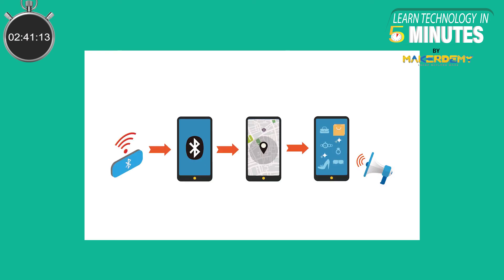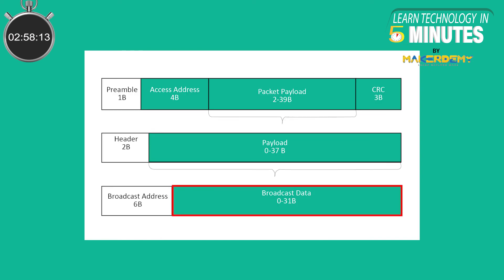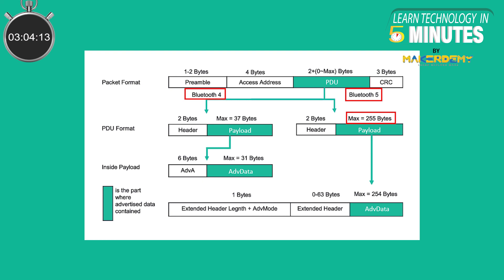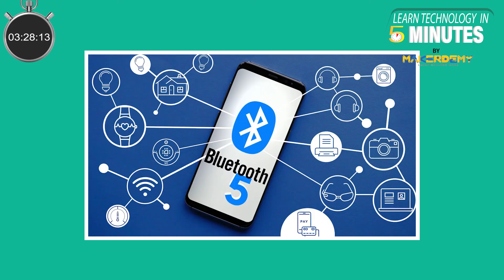Finally, let's look at the advertising capacity improvement. Advertising essentially involves broadcasting packets that allow another scanning device to discover them. The scanning device may then decide to initiate a connection if the advertisement packets indicate that the advertising device allows it. In earlier versions of Bluetooth, the advertising data payload size was capped at 31 bytes. In Bluetooth 5.0, a new advertising mode called Extended Advertising is introduced, allowing up to 255 bytes of payload data per packet instead of the original 31 bytes limit. With increased advertising data capacity, beacons can now transmit much more data, unlocking new IoT applications and use cases.